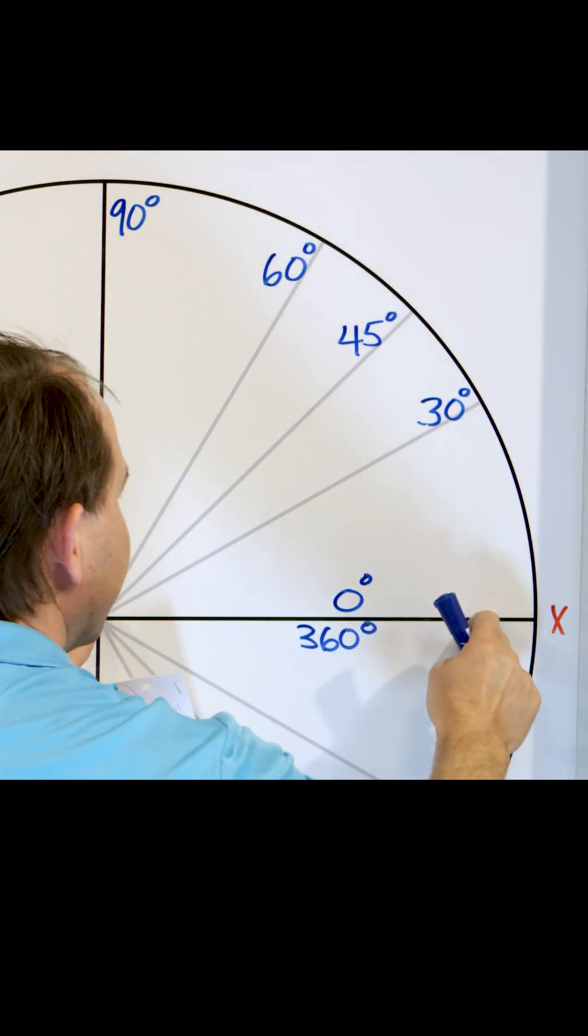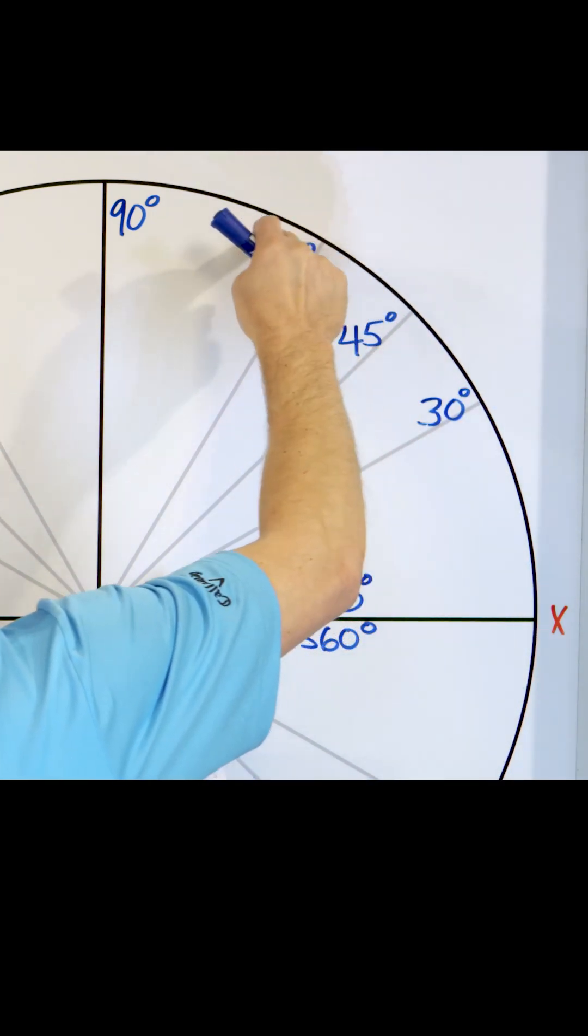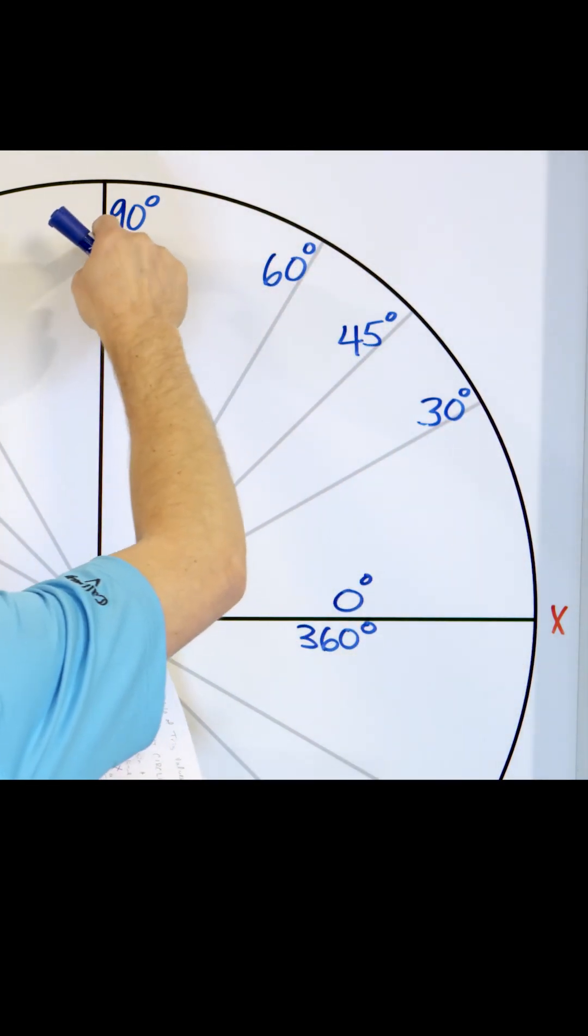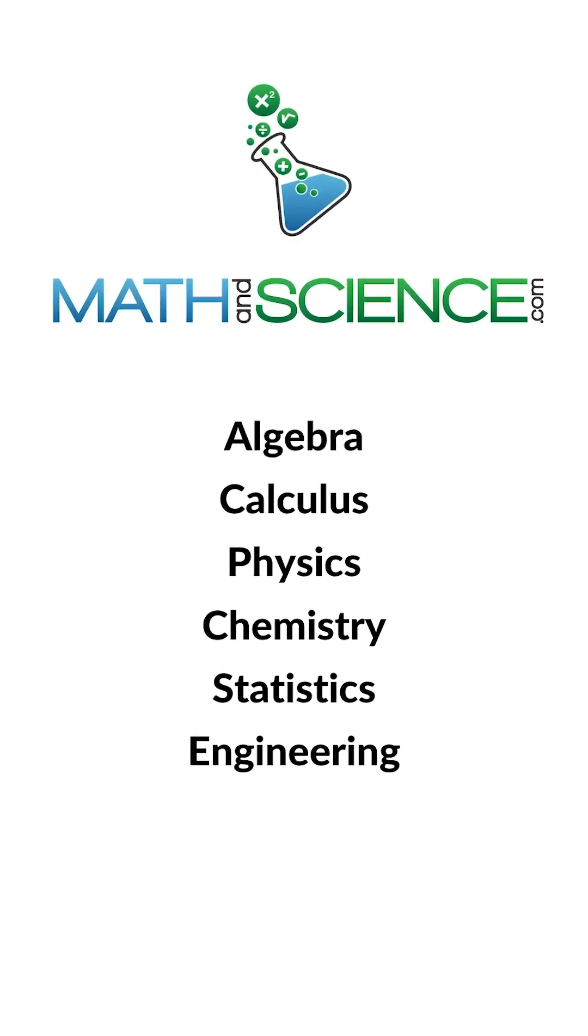The projection down here is about this long for the cosine of 30. But the projection over here is the exact same distance as the projection down here, but it is the sine of 60 being that same projection. Learn anything at mathandscience.com.